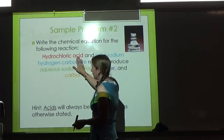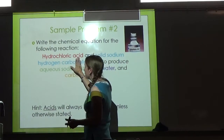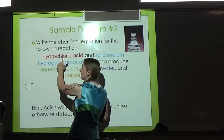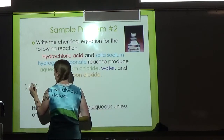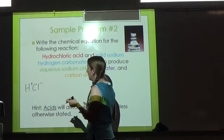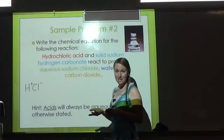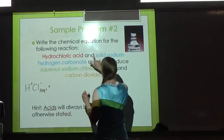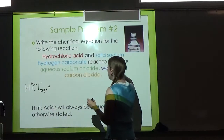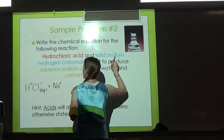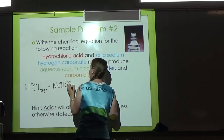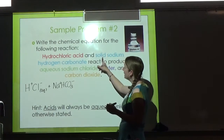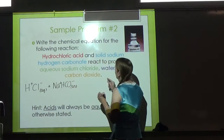Hydrochloric acid: I know it's an acid, so it starts with H. H has a positive 1 charge. Hydrochloric means it has chloride—Cl, negative 1—attached to it, so I don't need any extra subscripts. I'll put my little 'aqueous.' Then 'and,' so I'll put a plus. Solid sodium hydrogen carbonate: sodium is Na, positive 1. Hydrogen carbonate is HCO3—on your polyatomic ion sheet—with a negative 1 charge, so no additional subscripts. It's a solid, so I'll put a little S.